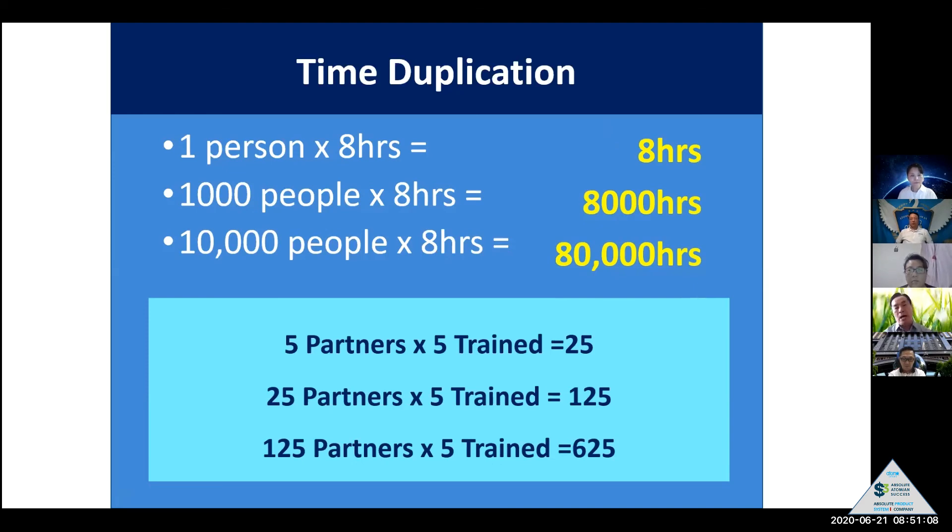So later in China and India, more and more people educated everywhere. They do learning and learning every single day. What's going to happen? 80,000 hour productivity. This is because of time duplication. We have big money you can make later.